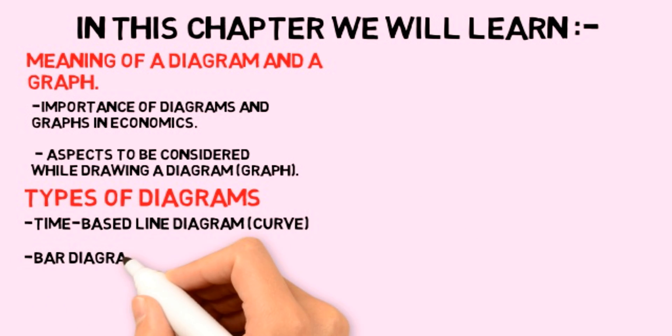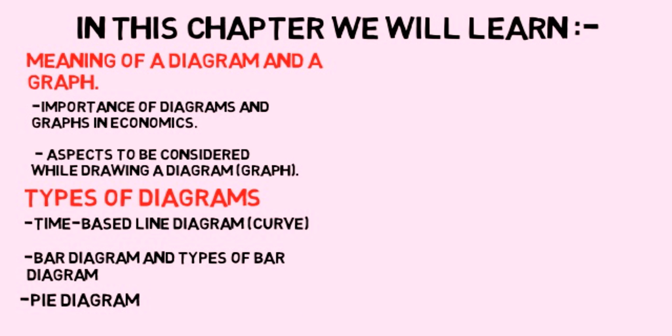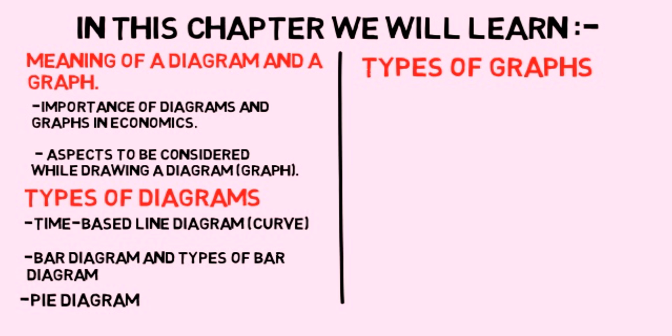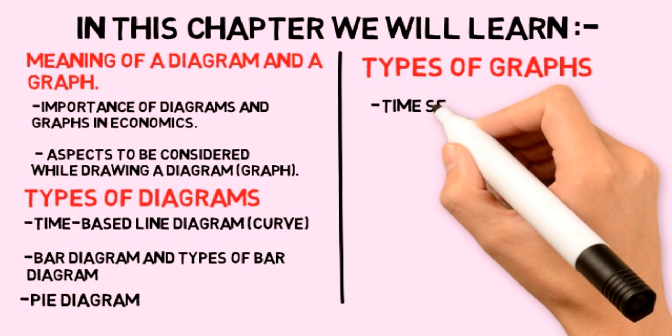Second, types of diagrams. There are three types of diagrams: first, time-based line diagram; second, bar diagram and types of bar diagram; and third, pie diagram. After that we will learn about the types of graphs, which include time series graph.